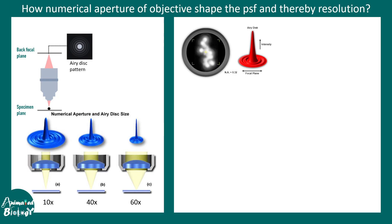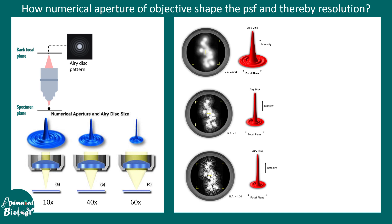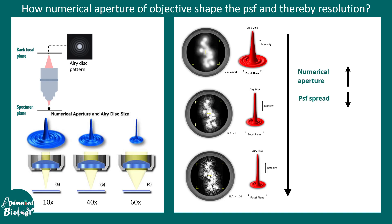Consider a collection of points rather than a single point object. At 10x with NA of 0.3 the image is not resolved — one cannot say how many points are in the image. As we increase the objective NA by going to 60x, one can now distinguish individual points. The point spread functions and intensity profiles become more crisp and sharp when NA is increased, reducing the overlap between individual PSFs. Greater the numerical aperture, smaller and crisper the PSF, the limit of resolution D decreases, and the resolving power increases.